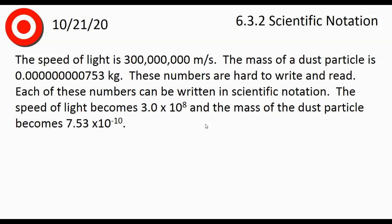For example, the speed of light is 300 million meters per second. The mass of a dust particle is 0.000000000753 kilograms. These numbers are hard to write and hard to read too.